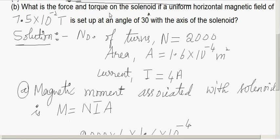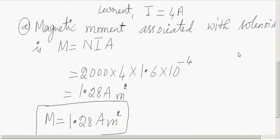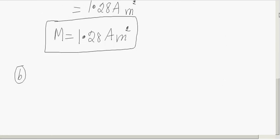Now question number B: what is the force and torque on the solenoid if a uniform horizontal magnetic field of 7.5 into 10 to the power minus 2 tesla is set up at an angle of 30 degree with the axis of the solenoid? When a solenoid is kept in a uniform magnetic field such that its axis makes some angle with the field, the solenoid experiences a torque but the net force is zero.